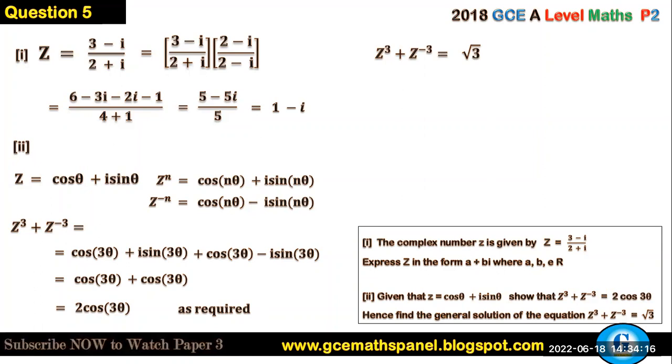Hence here means z³ + z⁻³ = √3. I'm just going to replace z³ + z⁻³ by 2 cos(3θ). Even if I could not do the first part, I can still use the solution to the first part to find the general solution. In an exam, even if you cannot prove this, use what has been given there to continue solving. This implies that 2 cos(3θ) = √3.